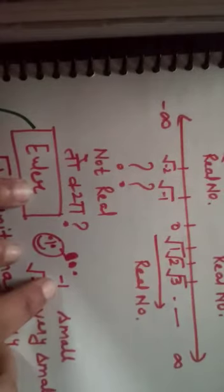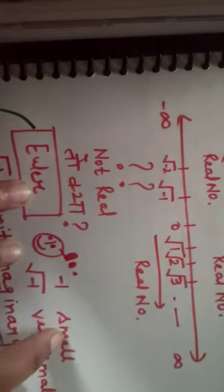This comes from Euler. He has decided that negative number minus one, when under root, what is the result?